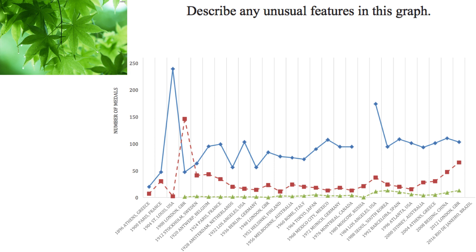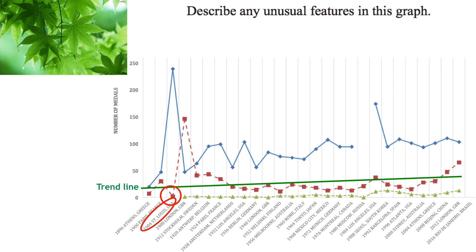Now let's do the same thing but look at Great Britain. First of all, we're going to put in a trend line for Great Britain, and look at what values are unusually high or low compared to that trend line. There's a very low value here in 1904 St. Louis — they obviously scored a very low number of medals there. We've got another spike, and if I follow that down, that is in 1908 in London.